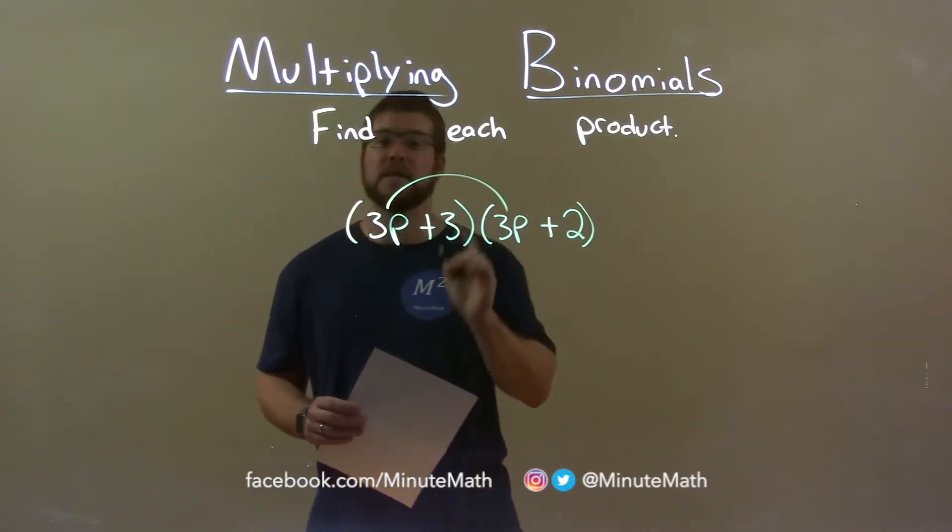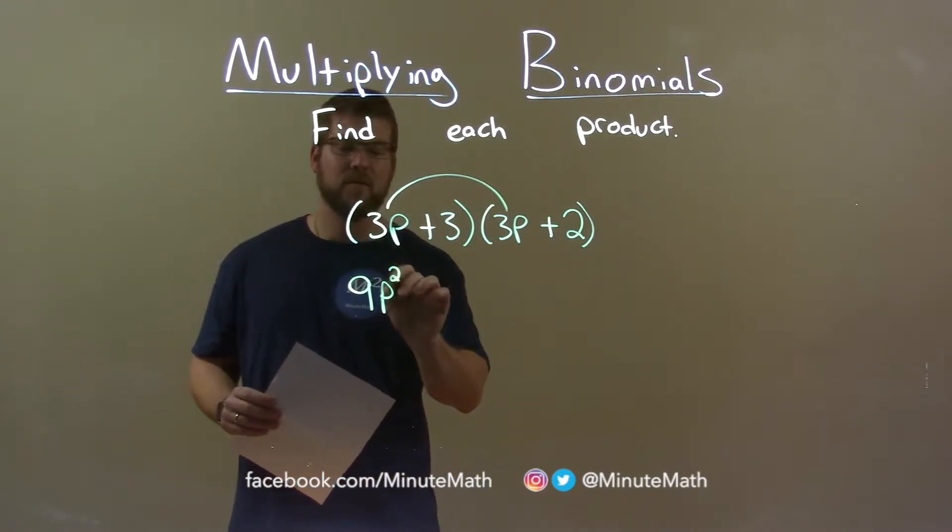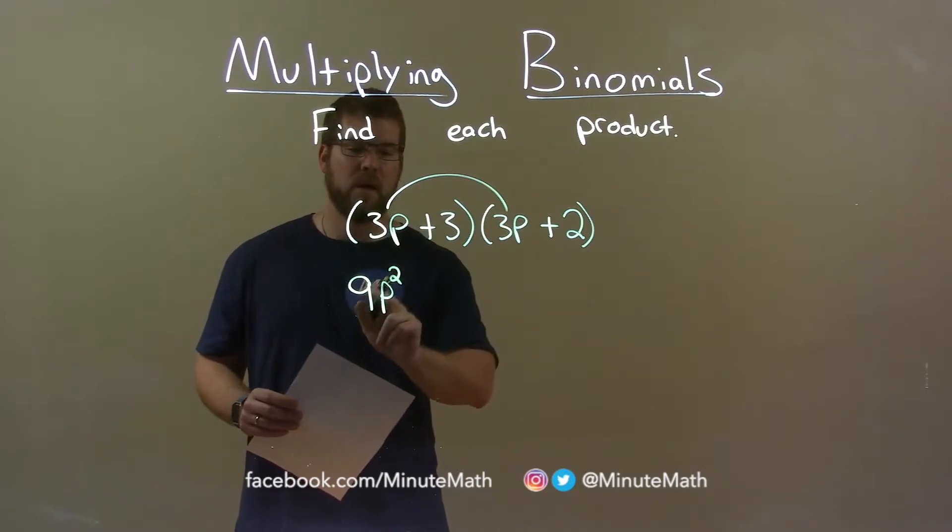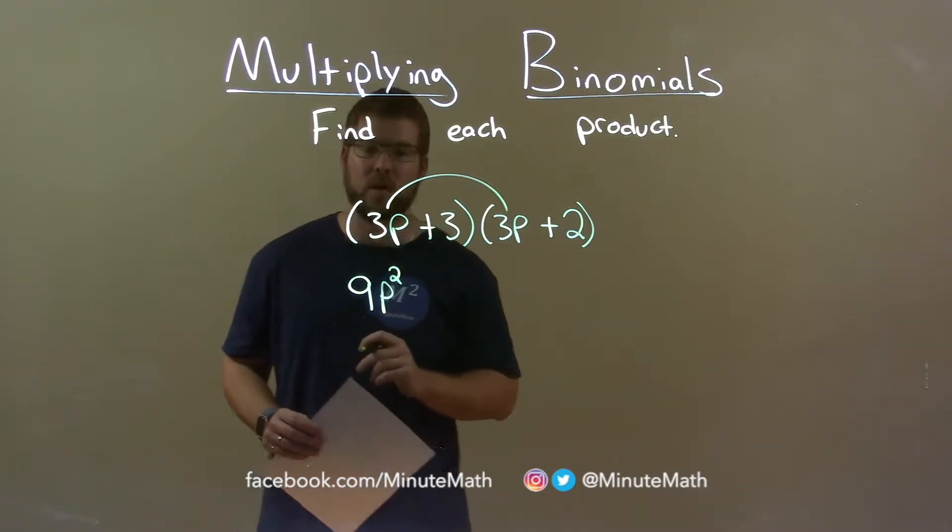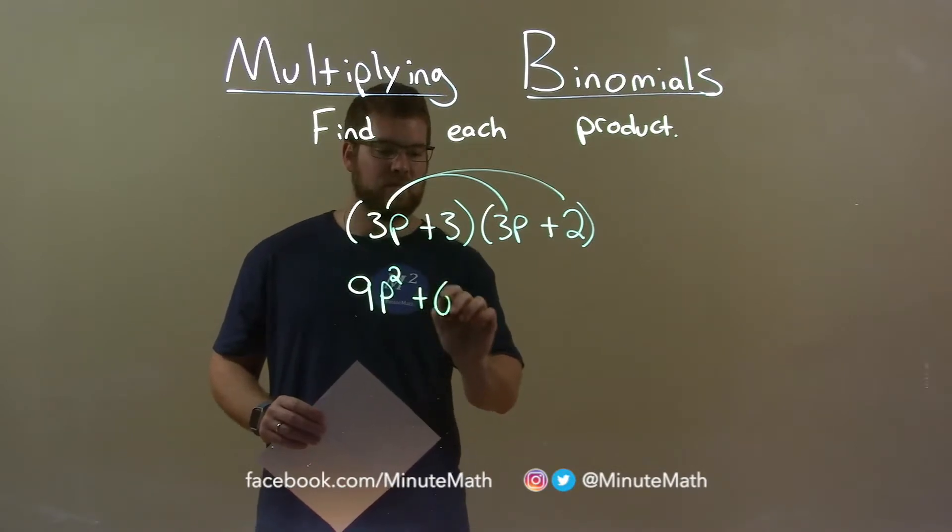So, 3p times 3p becomes 9p squared. 3 times 3 is 9, and p times p is p squared. 3p times 2 is 6p.